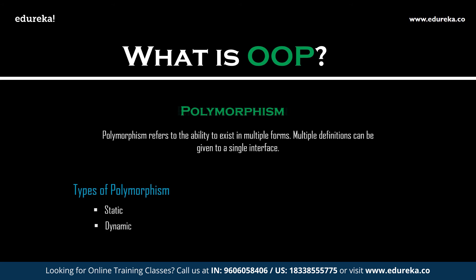Dynamic polymorphism, or runtime polymorphism, is a type of polymorphism that is resolved during runtime. An example of runtime polymorphism is method overriding — a feature of OOP by which the child class or subclass can redefine methods present in the base class or parent class. The method that is overridden has the same name as well as the same signature, meaning the same arguments passed and the same return type.